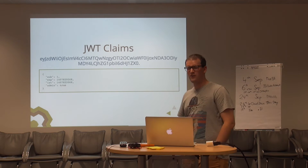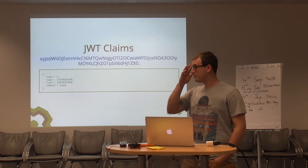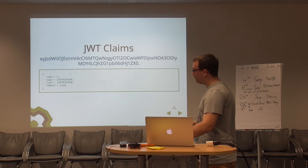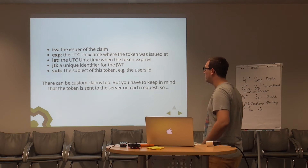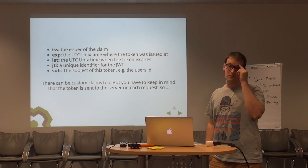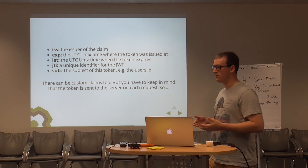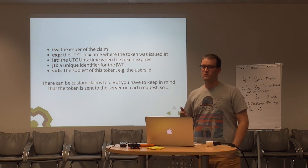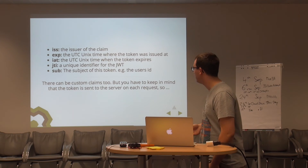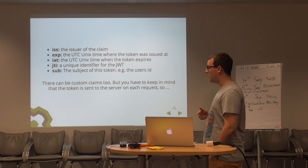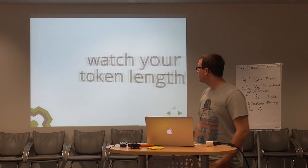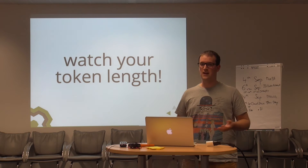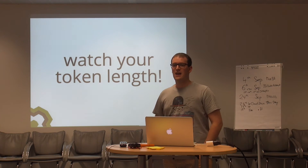The claims are the real payload. In the case of JWT they are a JSON object and basically they can contain everything. But there are some registered claims — for example, the ISS claim for issuer, expiration, issued-at, all the stuff you need to perform your login and expiry mechanisms. They usually contain the subject which identifies the user who is the owner of the token. You can add as many claims as you want, but you should watch your token length — keep it as short as possible since it's sent to the server every time.